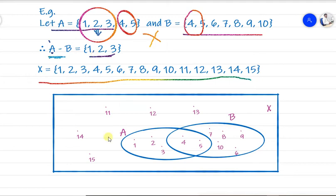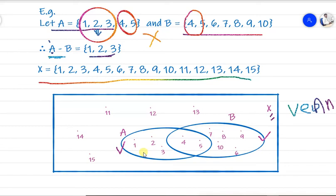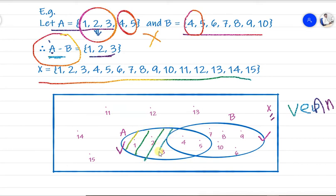Now let's look at the Venn diagram. The universal set X is represented by the rectangular region, with set A and set B shown as circles inside. To represent A minus B, we shade the portion of A that does not overlap with B. That shaded portion represents the difference of A and B.